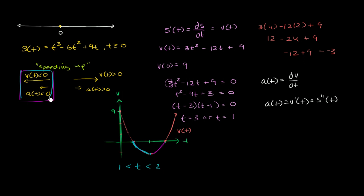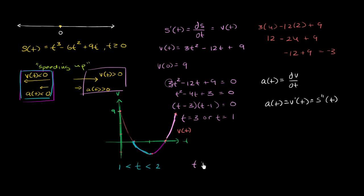Now let's think about where velocity is greater than 0 and acceleration is also greater than 0. Our velocity is greater than 0 before t equals 1, but notice the slope there is negative, so that doesn't apply. After t equals 3, our velocity is greater than 0 and the slope of the velocity — the acceleration — is also greater than 0. That's the interval t greater than 3, where we're speeding up in the rightward direction. So when are we speeding up? Between the first and second seconds, and then again after the third second.